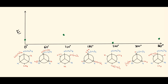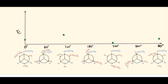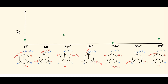Now for the three eclipsed conformers. The eclipsed at 300 degrees has no large groups directly on top of each other — every big group is next to a small hydrogen. This is the best-case scenario for an eclipsed conformer, so we plot it higher than all staggered conformers but not too high.